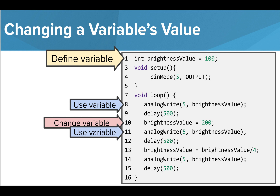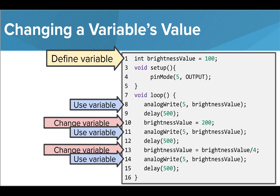On line 13, we are using an equation to change the value of our variable. We are taking the previous value of the variable, which was 200, and dividing it by 4. So our variable now has a value of 50. When we use our variable for the last time on line 14, the LED will have a brightness of 50.